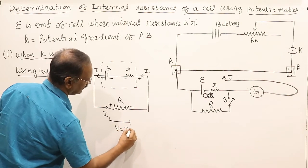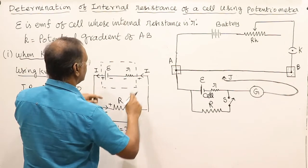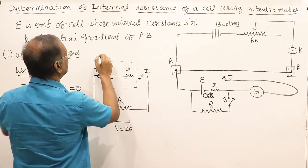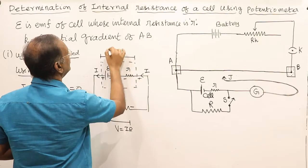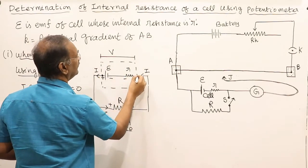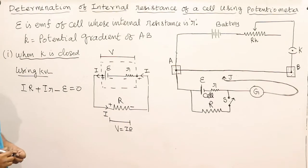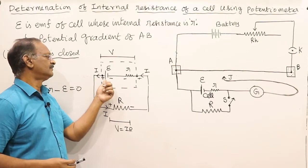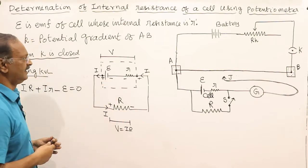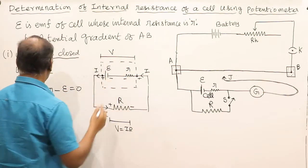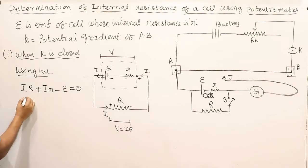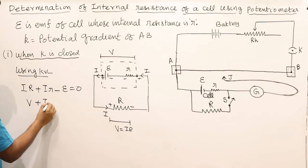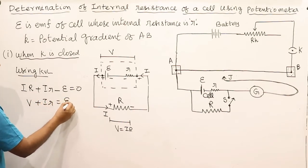So V equals I×r. This is the same potential at this point — that is the terminal potential of the battery. The terminal potential is the potential available between the two terminals of a cell. We can write: V plus I×r equals EMF. This is the key equation.